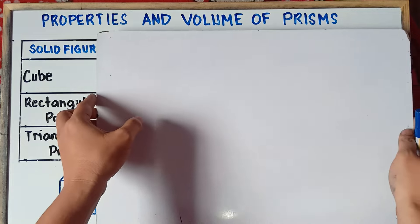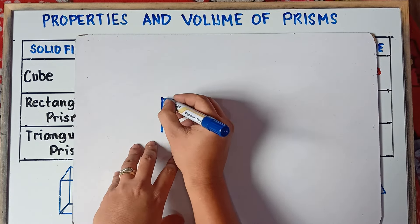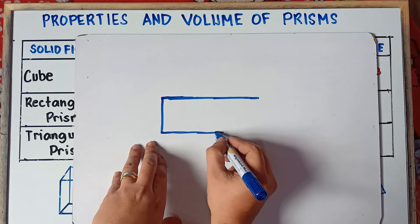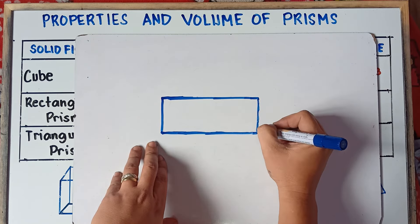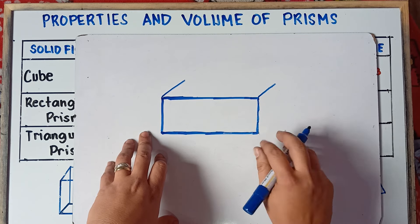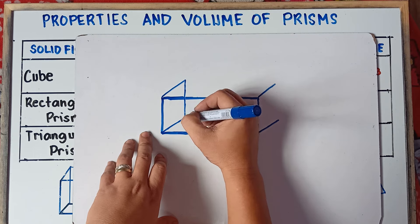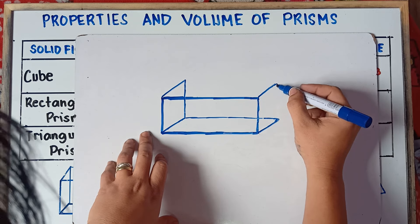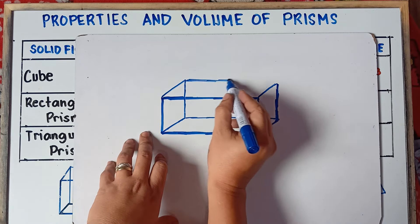So let's proceed to rectangular prism. First thing to do when you draw a rectangular prism — you draw a rectangle. You can use a ruler to draw it more neatly. Then you draw these connecting lines, same as with the cube — four lines — and connect them to form the rectangular prism.